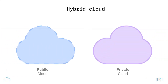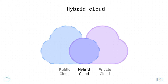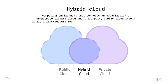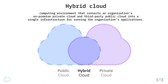Hybrid cloud, as we covered in the previous lesson, is a computing environment that connects an organization's on-premise private cloud and third-party public cloud into a single infrastructure for running the organization's applications.